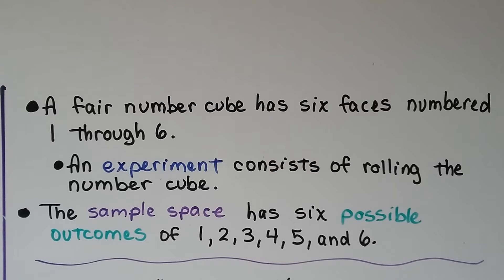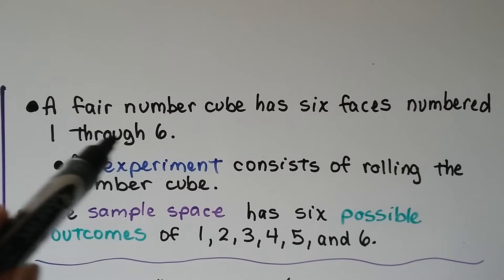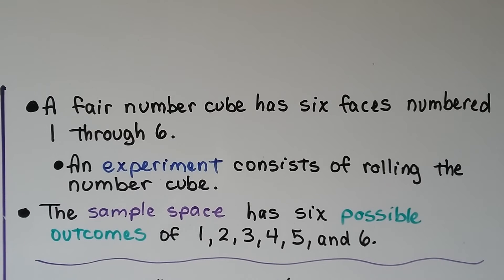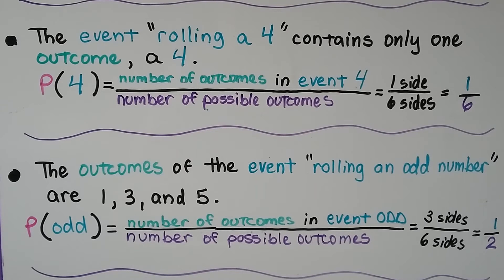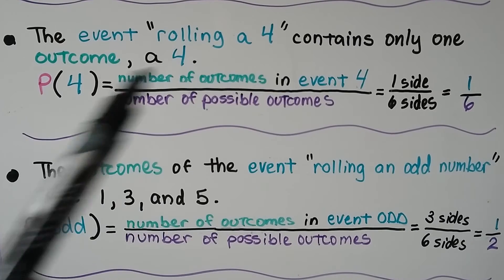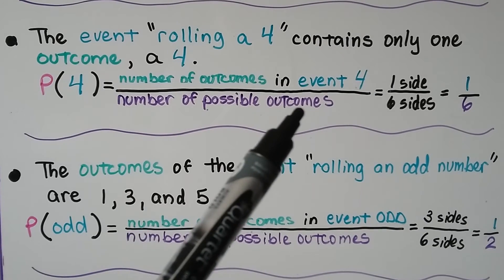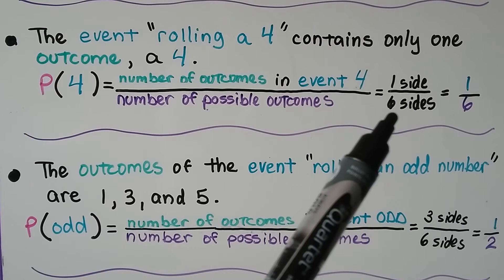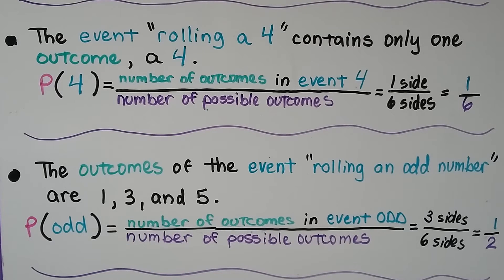A fair number cube has 6 faces numbered 1 through 6. An experiment consists of rolling the number cube, and the sample space has 6 possible outcomes: 1, 2, 3, 4, 5, and 6. The event rolling a 4 contains only one outcome — a 4. The probability of rolling a 4 is the number of outcomes in the event (one side has a 4) over the number of possible outcomes (6 sides), giving us a 1/6 chance.